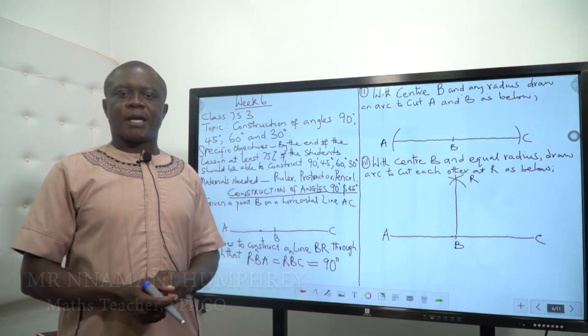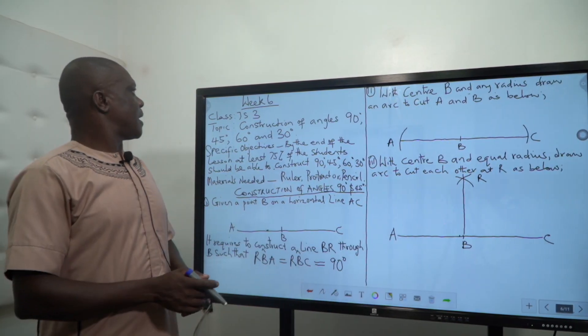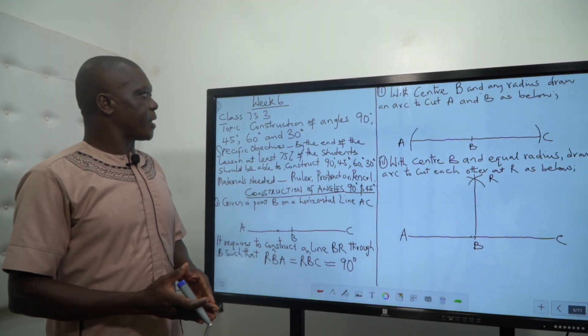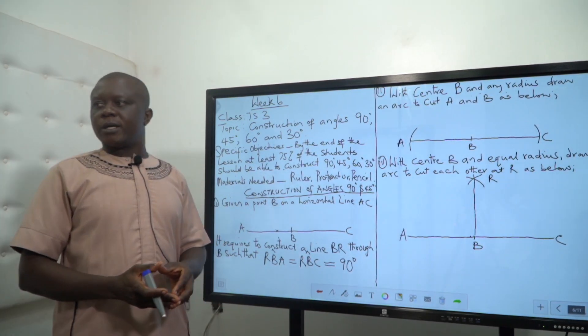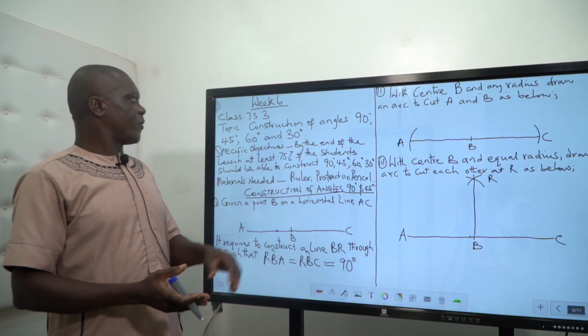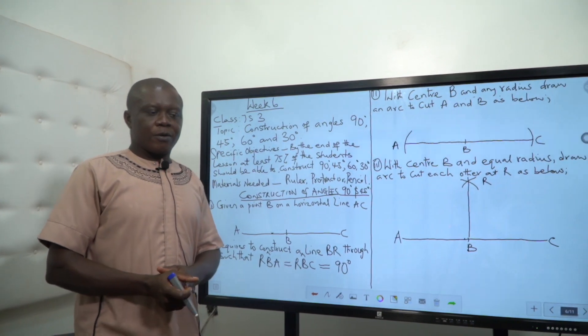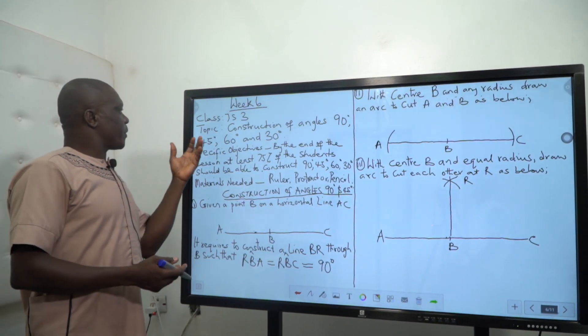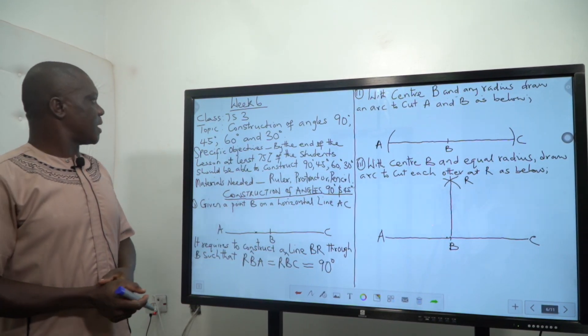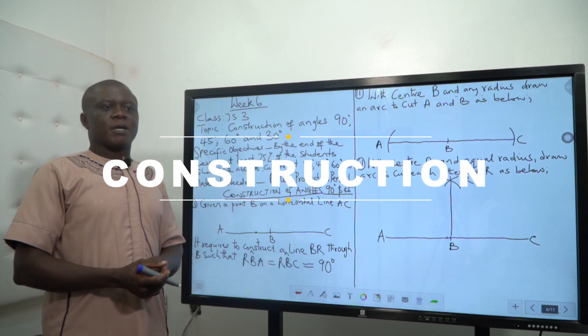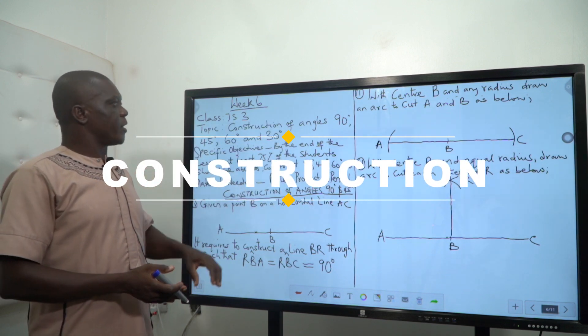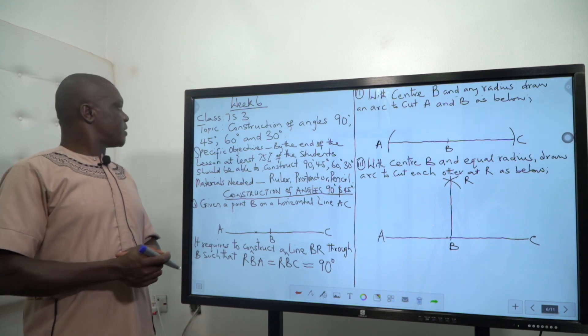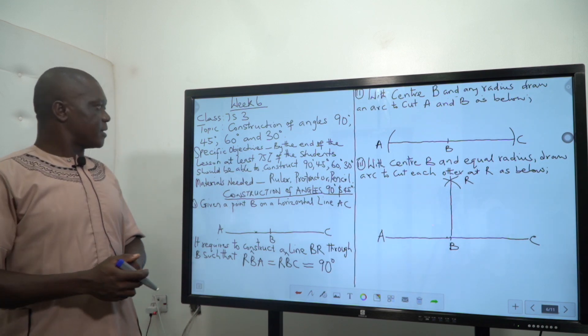Today we are going to enter week six, and this week six is the last topic or the last week we have for the teaching before you enter into basic certificate exam. The topic we want to look at is construction, but we will focus mostly on construction of angle 90, 45, 60 degrees and 30 degrees.